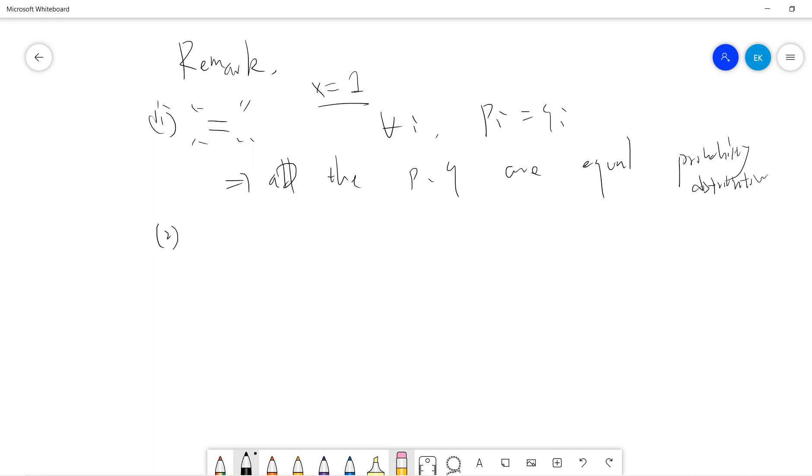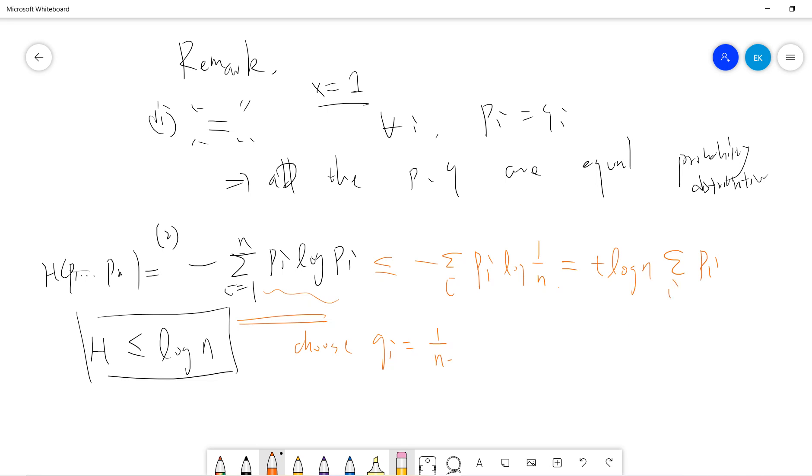Okay, also let me talk about the second remark. People usually define H as entropy. If someone gives you a probability distribution, one fact is that the entropy H will be less than log(n). Basically you can use a Lagrangian method to prove this, but now we have Gibbs inequality so we can easily prove it. We just choose Qi to be 1 over n, right? So this term is less than sum Pi log n, which is log n times sum Pi, so it's log n. So we prove that the entropy is less than log n by Gibbs inequality.